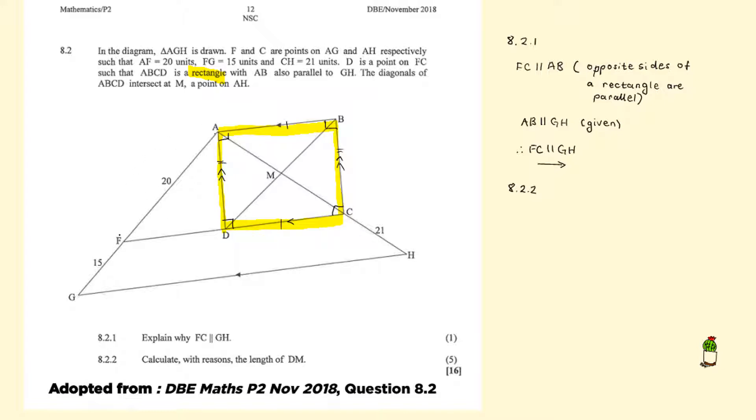So we have a line drawn parallel to one side of the triangle. Meaning that these two sides have been divided in proportion. So AF to FG is in the same proportion as AC to CH. So let's start off with that.